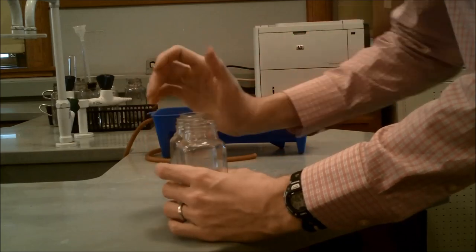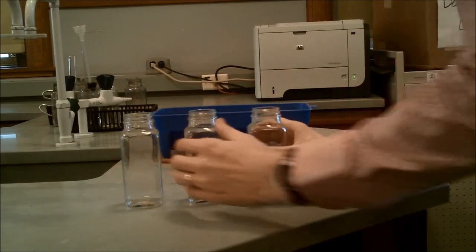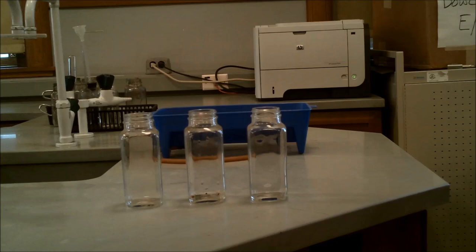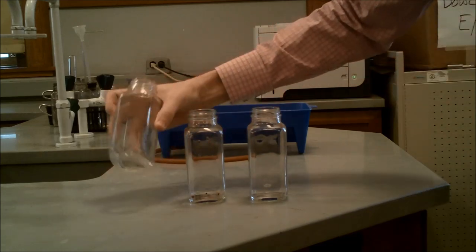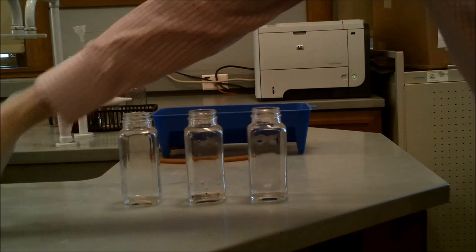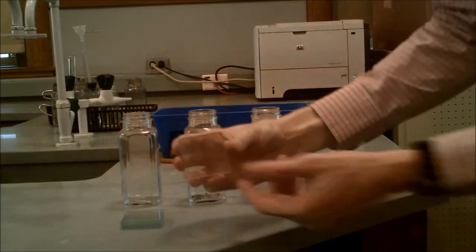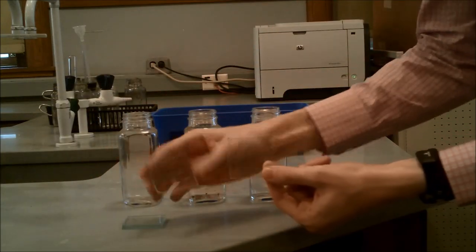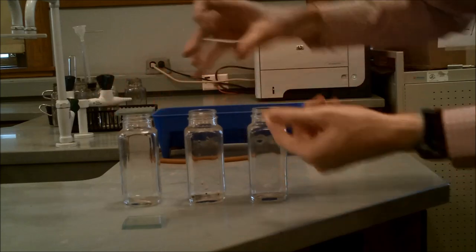The next is the gas collection bottles, the rectangular shaped ones. These will be the ones that you'll fill up completely with water and submerge in the reaction trough. The glass squares are what you're going to use to cover them up so that we can turn them upside down without losing any water.